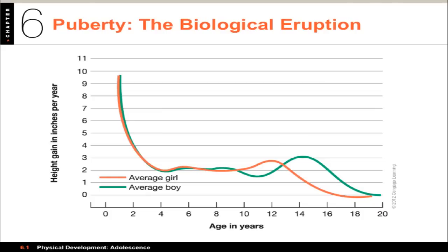Better nutrition during the 20th century caused children in industrialized countries to grow at a faster rate and become taller in adulthood than in previous generations. For instance, 15-year-old boys now are about 6 inches taller than they were 30 years ago, and 15-year-old girls are about 3 inches taller. This tendency is called a secular trend, and today you only see this change in cohorts in developing countries.